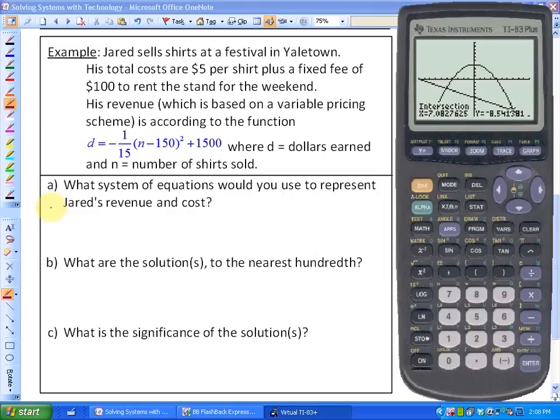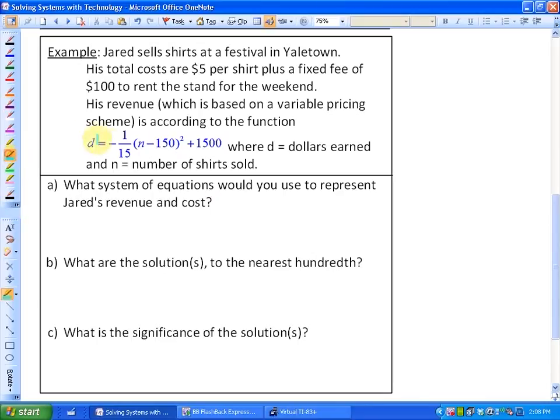What system of equations would you use to represent Jared's revenue and cost? We already have the revenue function right here. As far as the cost function goes, we're going to have to come up with that. His costs are $5 per shirt plus a fixed fee of $100 to rent the stand, so his cost function equals $5 per shirt, which is $5 per n, plus a fixed fee of 100.